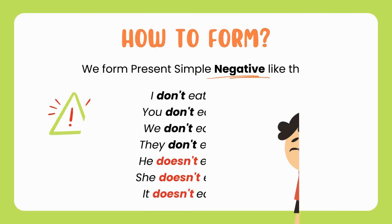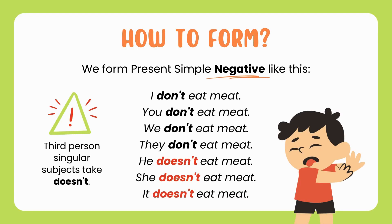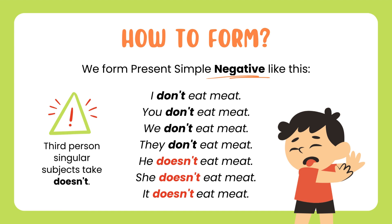How to form? We form Present Simple negative like this: I don't eat meat, you don't eat meat, we don't eat meat, they don't eat meat, he does not eat meat, she does not eat meat, it does not eat meat.